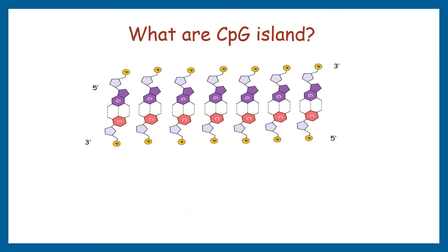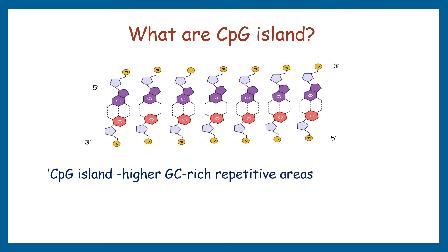Another important term when discussing GC-rich regions is the CpG island. Broadly, higher GC-rich repetitive areas are denoted as CpG islands in nucleotide sequences. There is a distinction between the two terms: CpG-rich regions refer to nucleotide sequences, while the isochore term is used for genome sequences. So remember: CpG-rich regions apply to nucleotide sequences, and isochores apply to genome sequences.